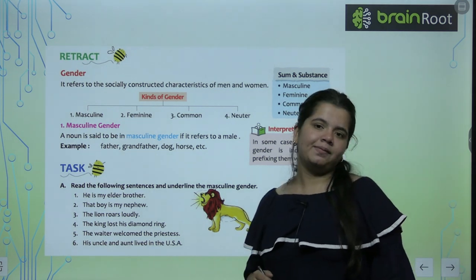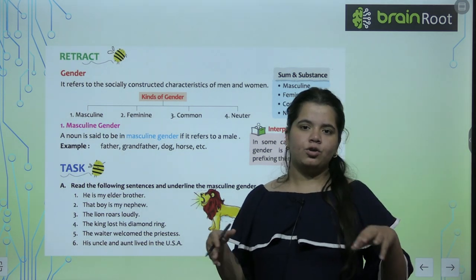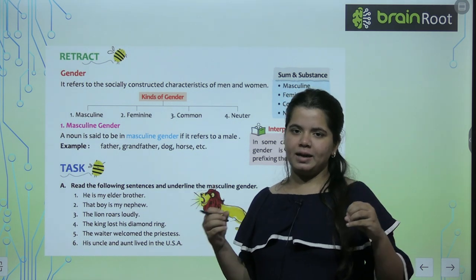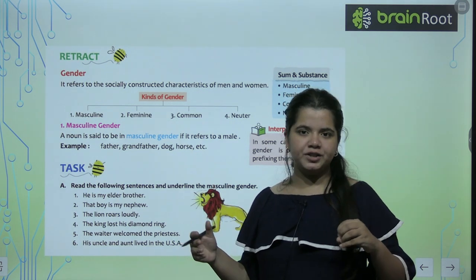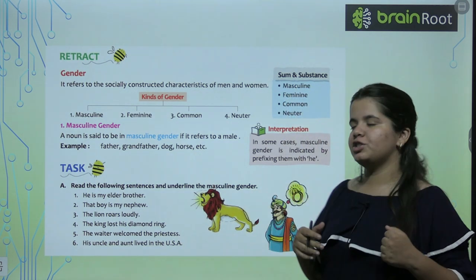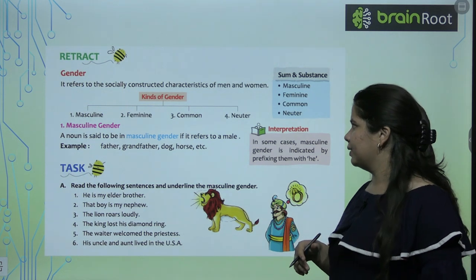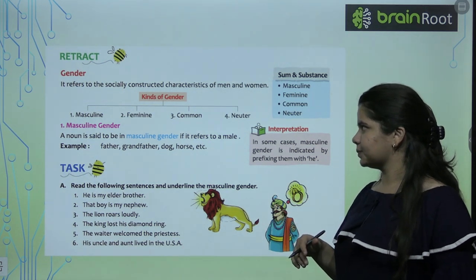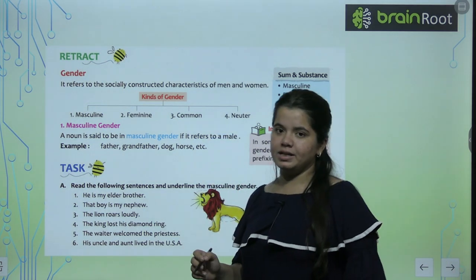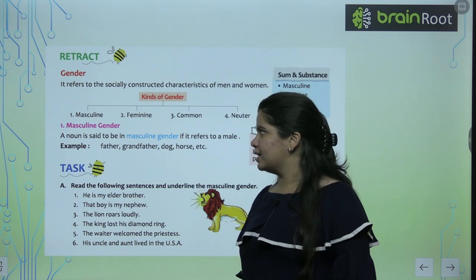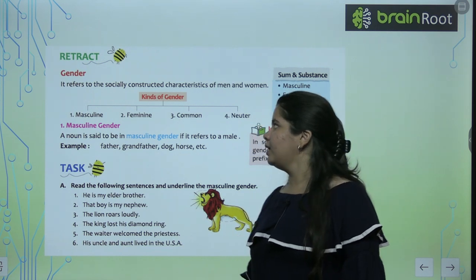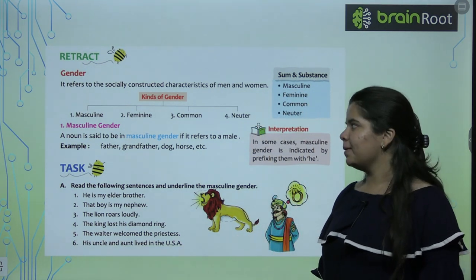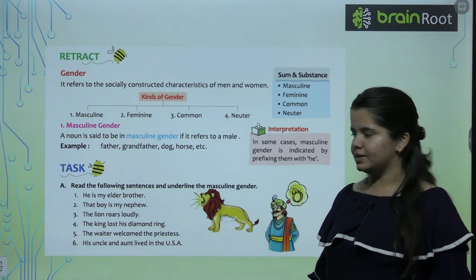Gender kya hai? Men or women. Jo bhi characteristics un dono men or women ko differ kerti hai, woh particularly unka gender banaati hai. Let's see. Kinds of genders: masculine, feminine, common and neuter. Sabse pehle hai humare paas masculine gender.